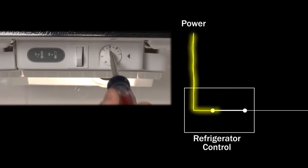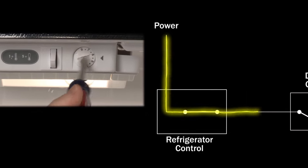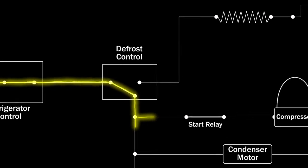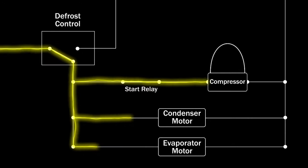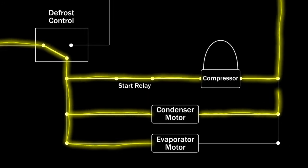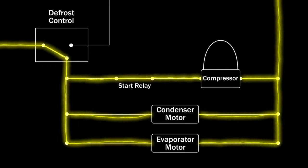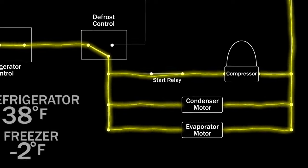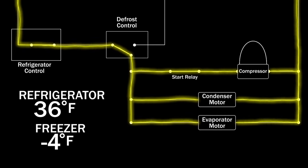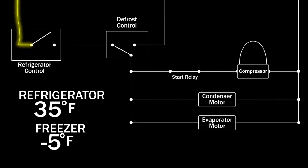To cool both the refrigerator and freezer, the control allows voltage to travel to the start relay and compressor, as well as to the condenser fan motor and evaporator fan motor. Once the proper temperatures are reached, the control shuts off the voltage to the cooling system. Keep in mind that it's normal for the temperatures to vary throughout this cycle.